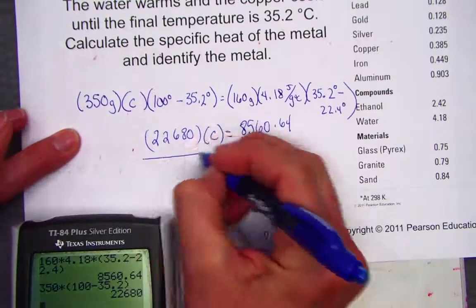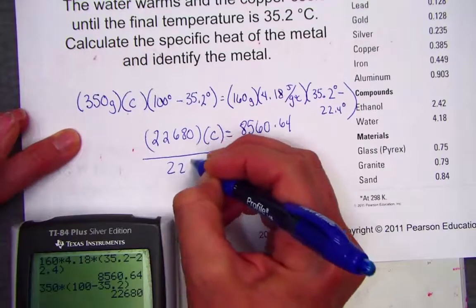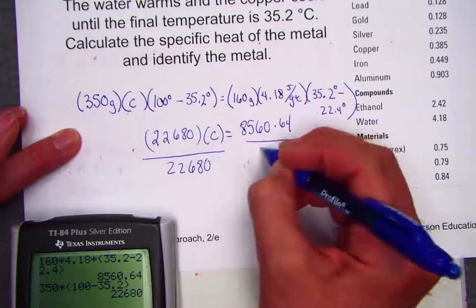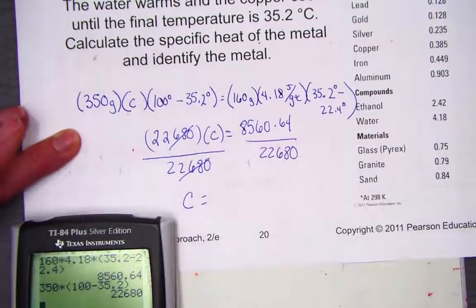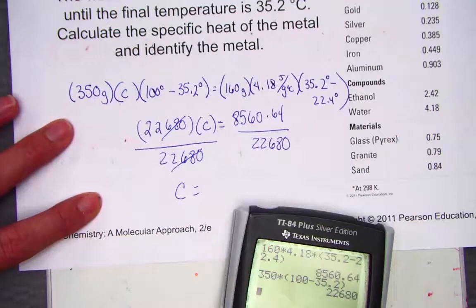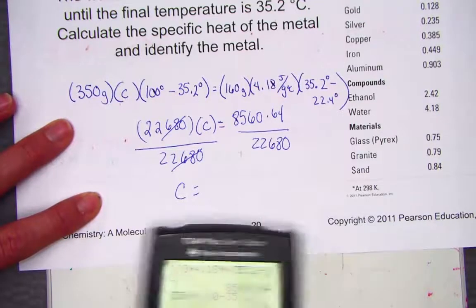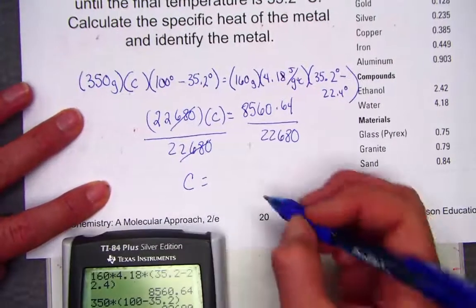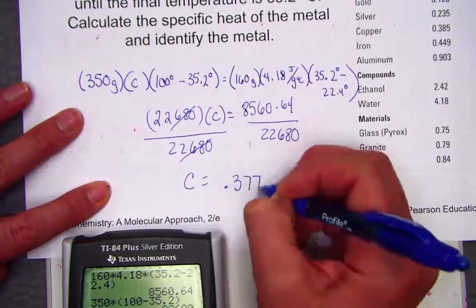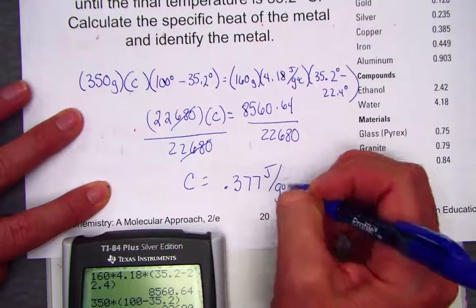So now, why don't we divide both by 22,680. And that allows me to simplify and isolate for the specific heat constant of our unknown metal. So we have 8560.64 divided by that previous answer of 22,680, and we get a value of 0.377 joules per gram degree Celsius.